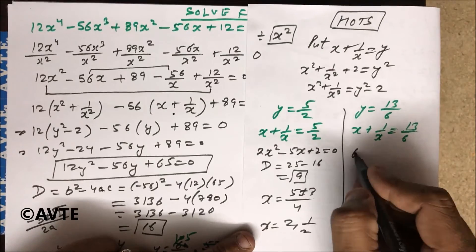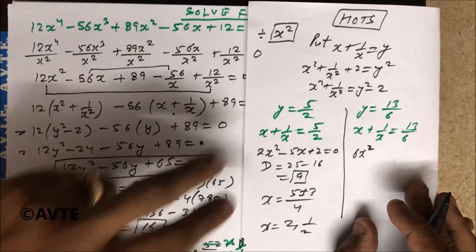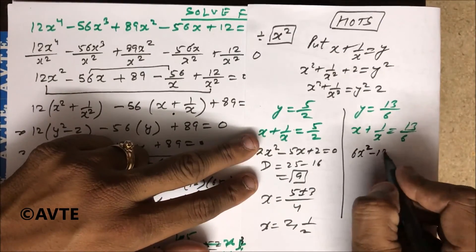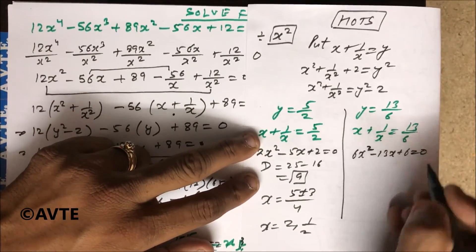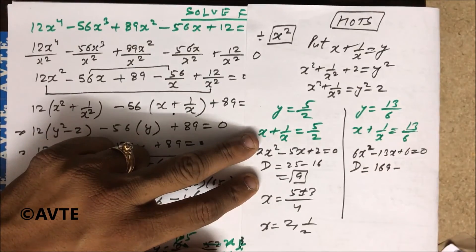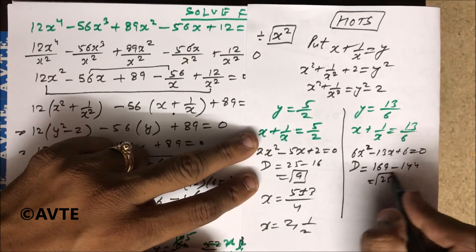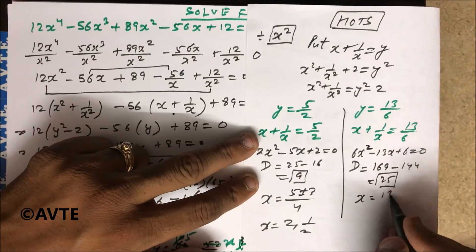And here it is 6x² - 13x + 6 = 0. You can find by discriminant method. This is 169 - 6(4)(36). 4 is 144 and 25. Here D is 25 when x is equal to 13.